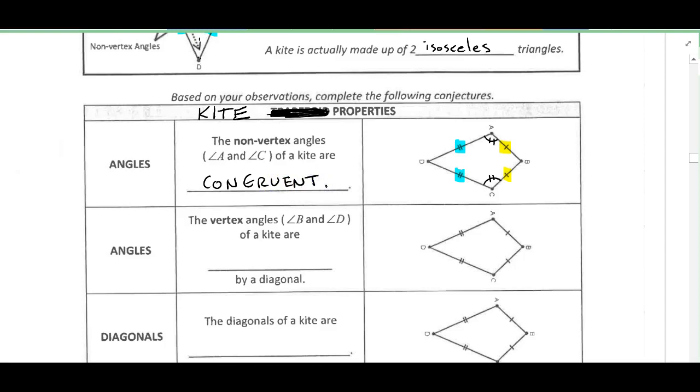And then the vertex angles, so that's B and D in our picture, of a kite. And then we have to fill in the word here. So I'm going to draw in this diagonal, and one of the things that we'll learn about the kite here is that this angle at the top has been bisected by the diagonal, and this angle at the bottom has also been bisected, bisected by a diagonal.